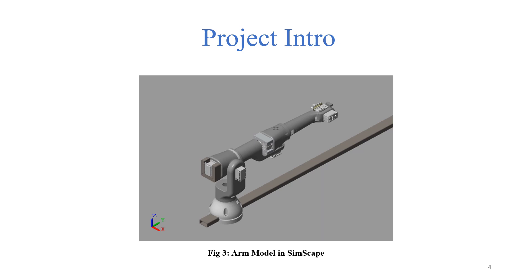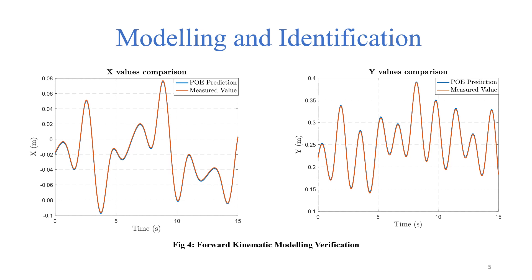This shows the arm's dynamic model in the Simscape environment in Simulink. We use this model to first test part of our control algorithms and identification processes, to verify our theoretical models of this arm. We start with the modeling and identification of the robot manipulator at hand. We derived the forward kinematic model, the velocity kinematics, and the dynamic model as well, using modern screw theory, which is heavily relied upon in this project.